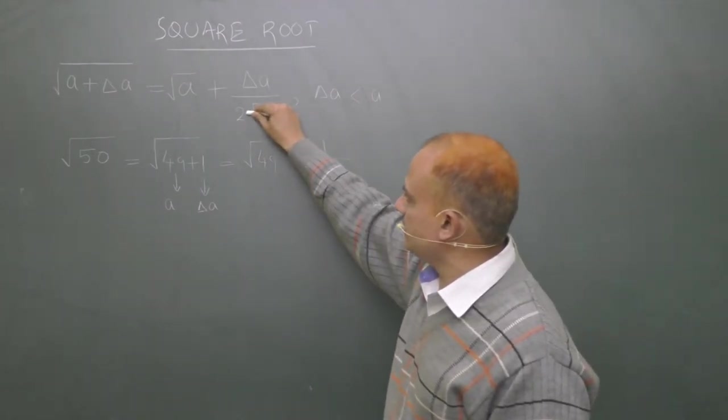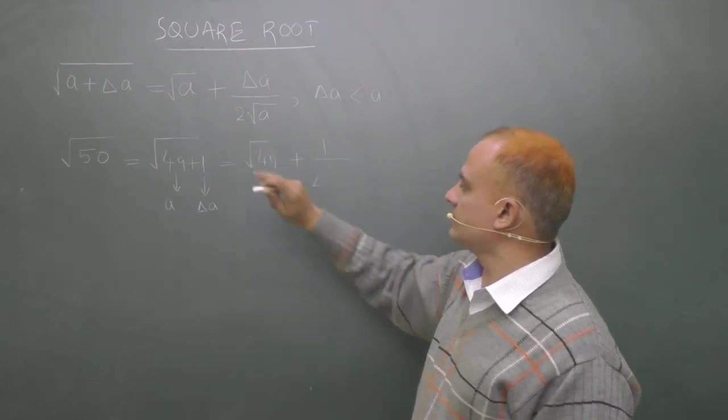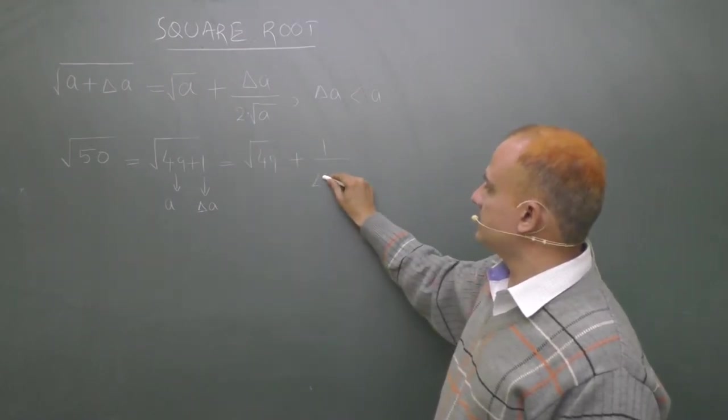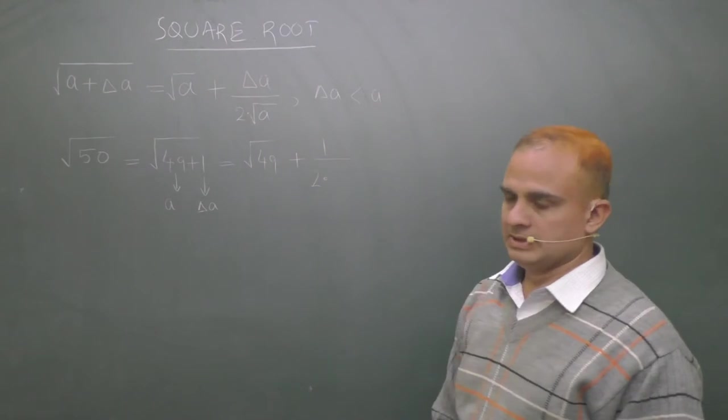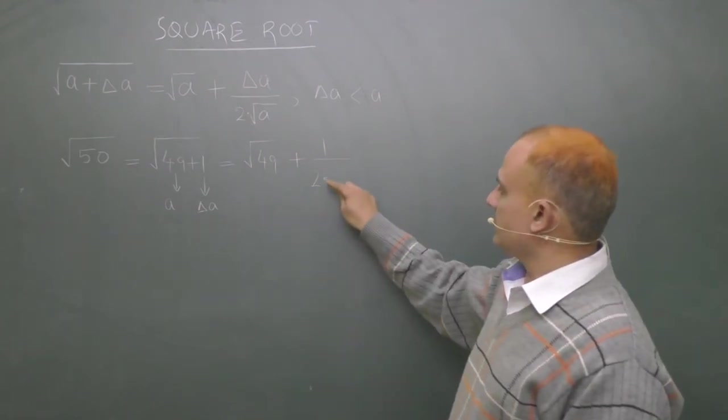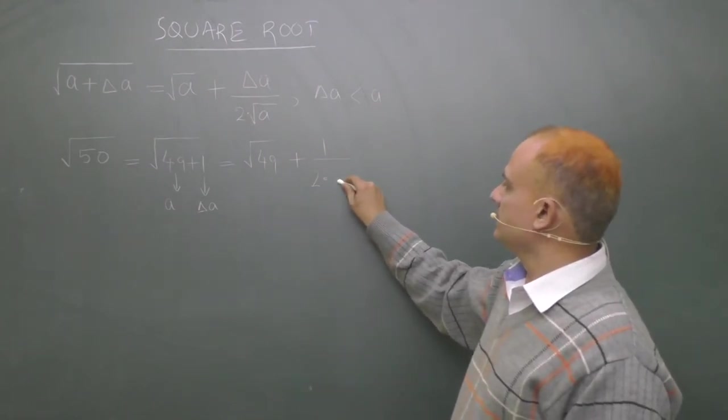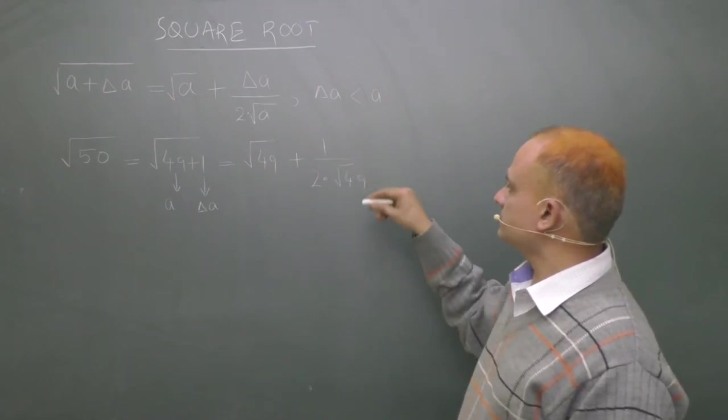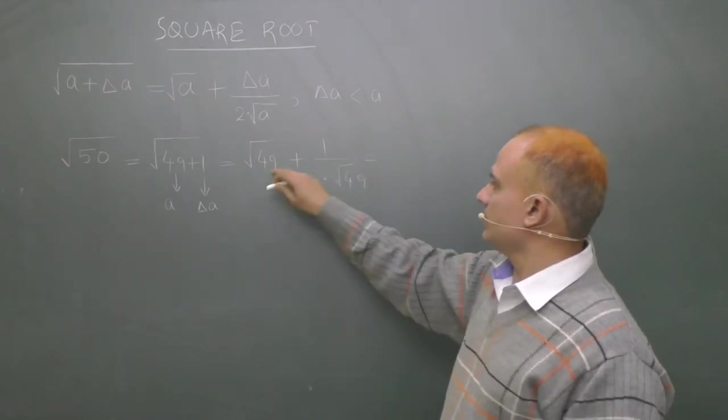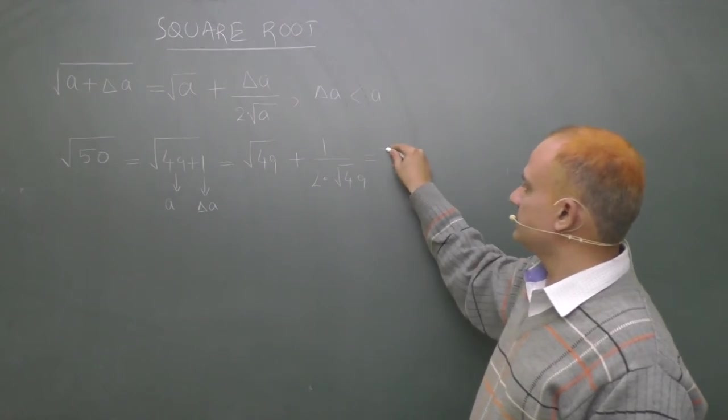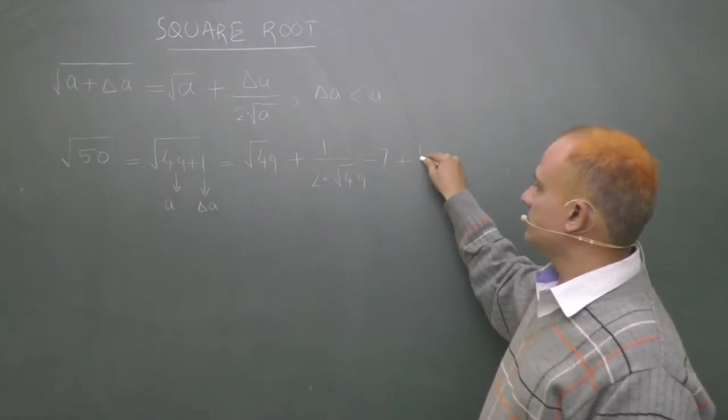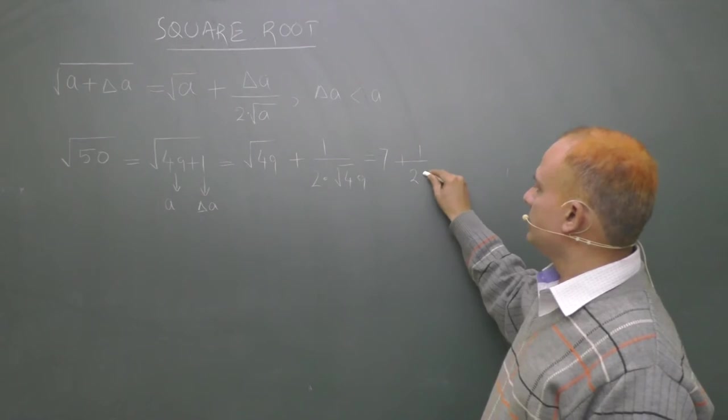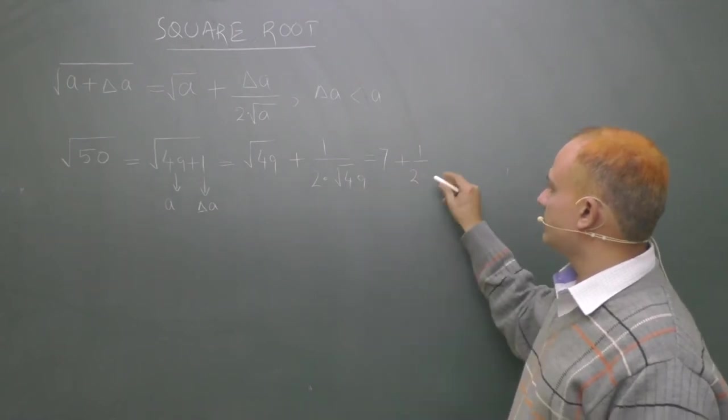If there is no sign in between these two variables and constants, it means there is a multiplication sign. So this dot indicates multiplication. Square root of 49. Square root of 49 is known to you. It is 7 plus 1 upon 2 into square root of 49 is 7.